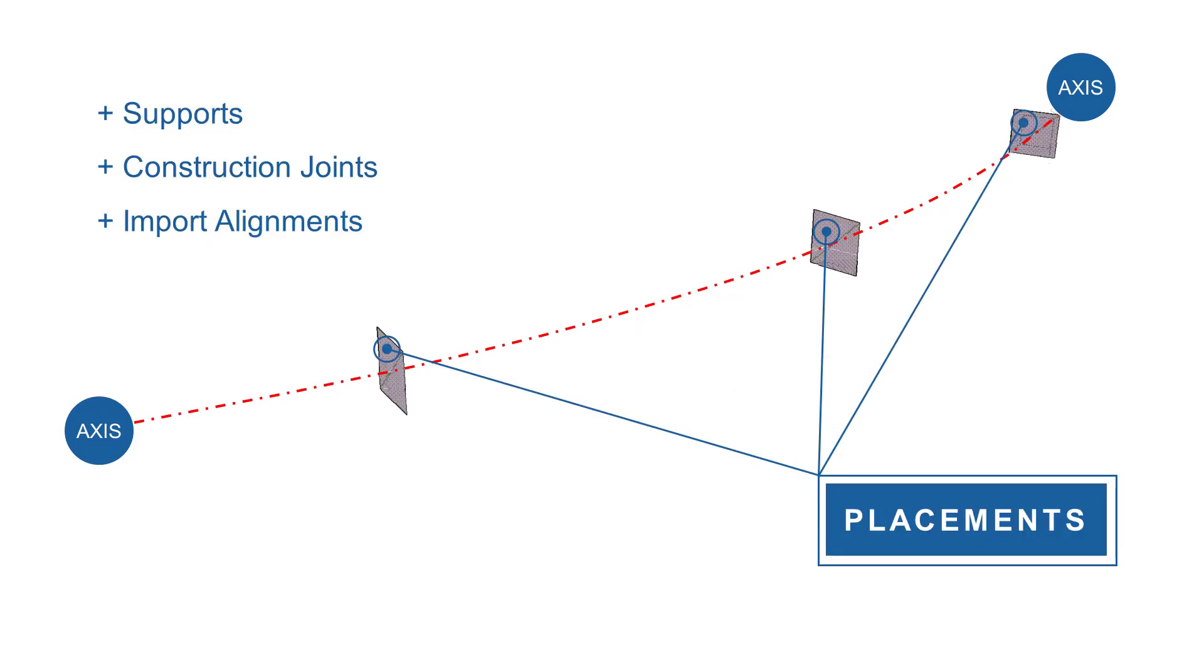As the alignment might not precisely represent the bridge length or indicates the start point and end point of it, the next step is to specify locations of relevance to the structure. These placements can represent supports, construction joints or any other essential element of the bridge structure.